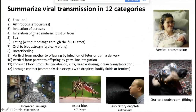We broke transmission modes into 12 categories, which are somewhat overlapping — you could fuse them or separate them further. Categories were fecal-oral, arthropod-borne (arboviruses moved around by arthropods), inhalation of aerosols, inhalation of dried material, sex, eating, oral-bloodstream transmission (typically biting), breastfeeding, vertical transmission from mother to fetus or during delivery, vertical transmission by germline integration, via blood products, or via contact — commonly skin, droplets, bodily fluids, or fomites.